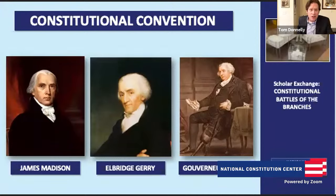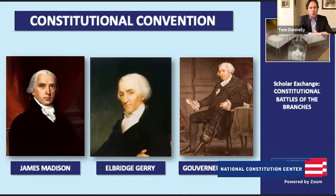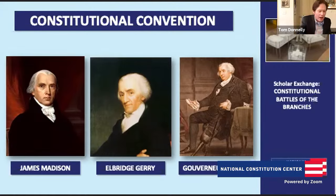Finally, they were looking at the Articles of Confederation — a national government that was very weak and didn't have a separate executive branch or judicial branch. The framers came to the Constitutional Convention looking to address all of those issues.